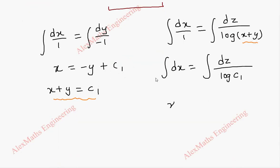So this integration will give x equal to 1 by log c1 is a constant which is written as it is. Integral dz is z. And we have another constant c2. So x minus z by log c1 is a constant c2.